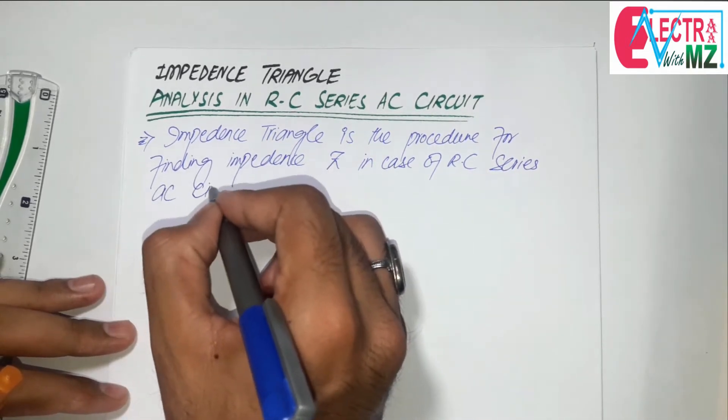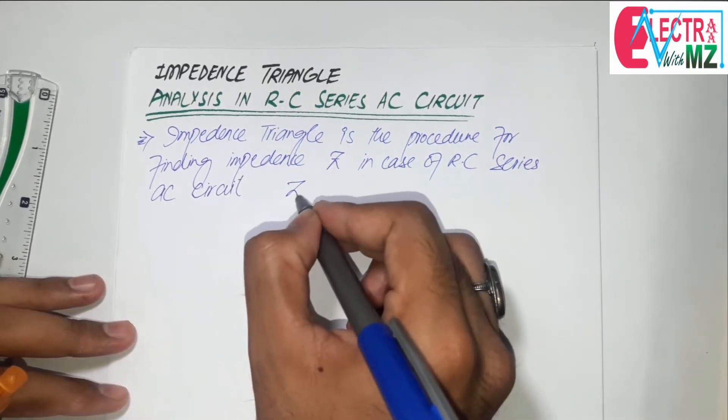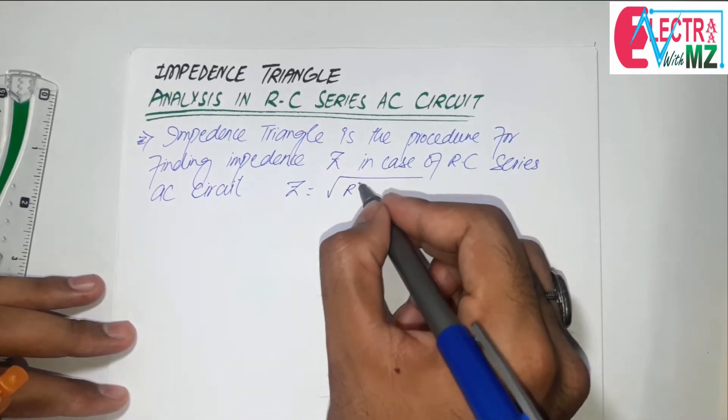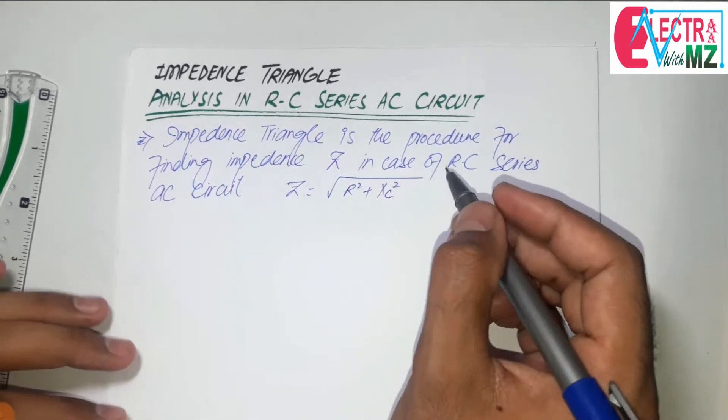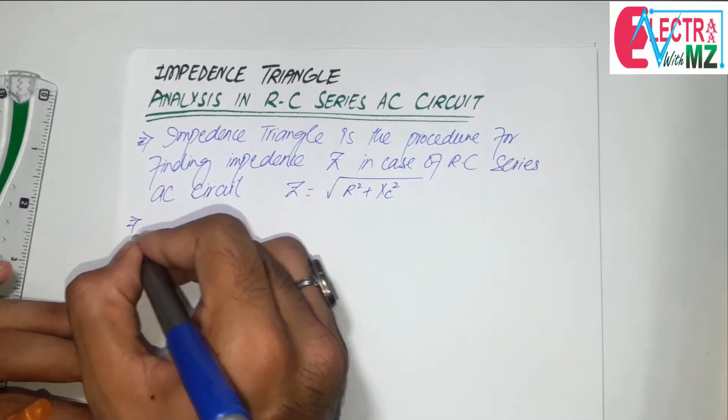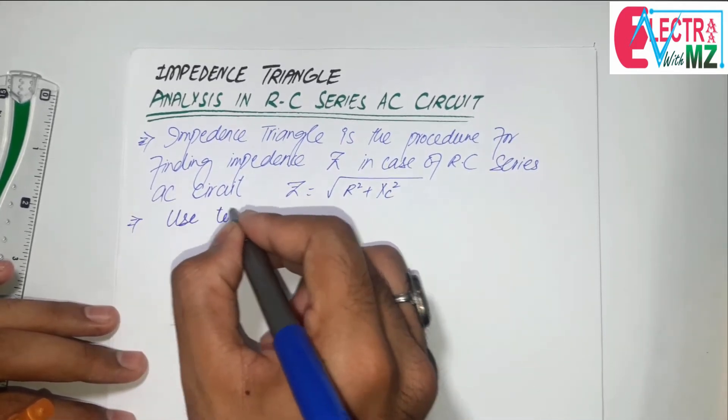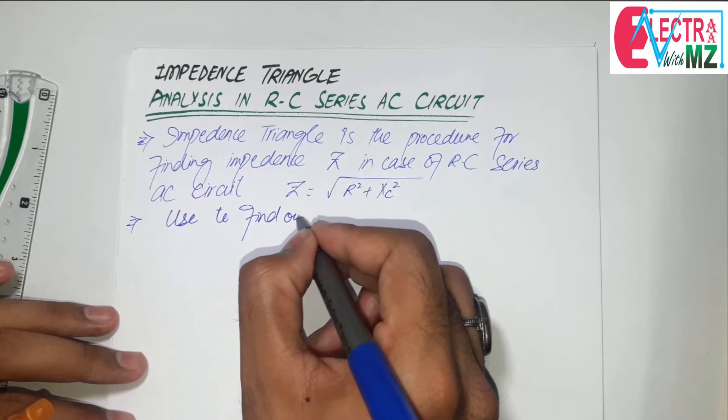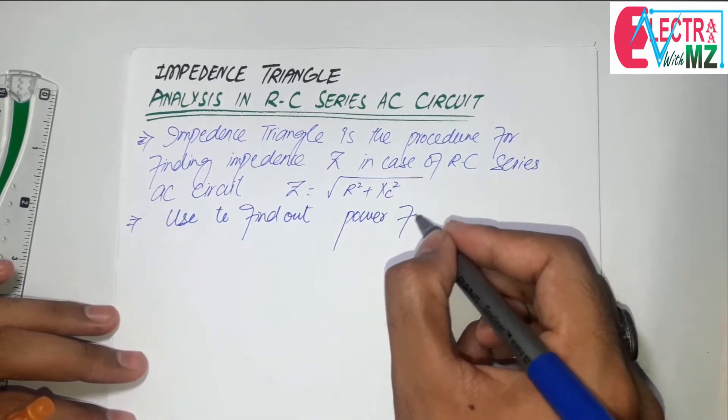Because Z is equal to square root of R squared plus XC squared. It is used to find out power factor.